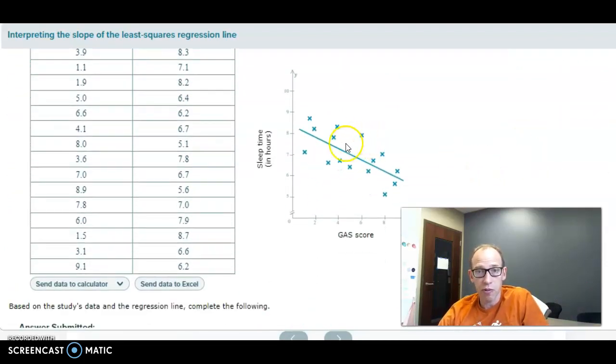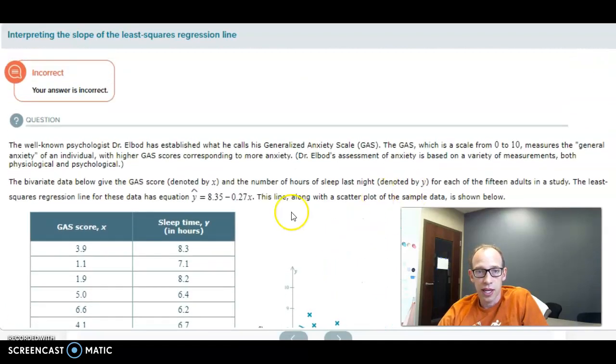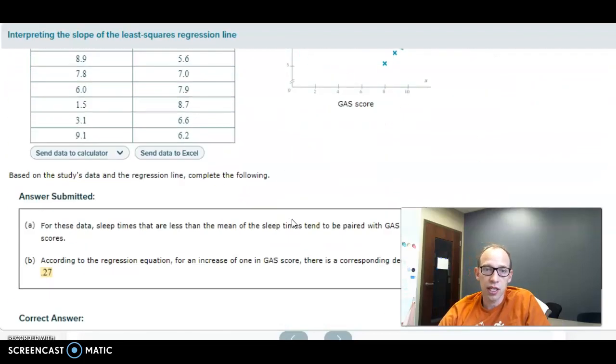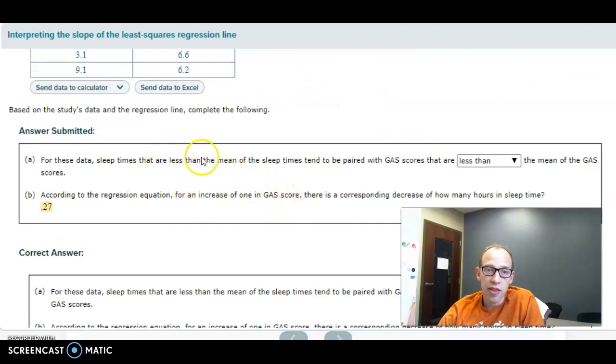How do we know? It's a negative slope, a downhill slope, and we have a negative slope in the equation as well. Negative slope always means negative correlation. So because it's a negative correlation, these two should be the opposite. If this is less than, this one has to be greater than. If this is greater than, this would have to be less than. Positive correlation, they match up. Negative correlation, they're opposite.